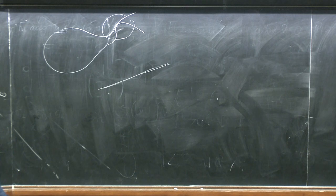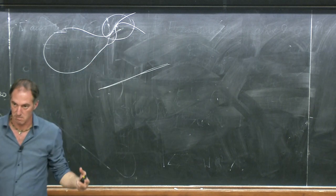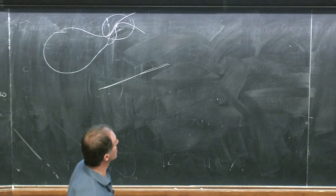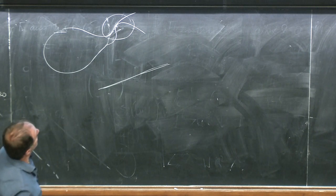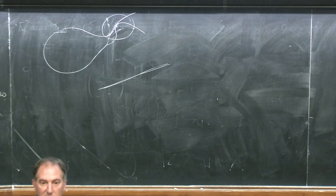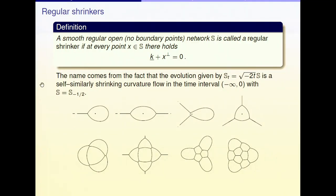So our limit shrinker is embedded, with no self-intersection. We also assumed all lengths are bounded away from zero. Since we are enlarging by a factor going to plus infinity, all the lengths in the limit network go to plus infinity. So all curves in the limit shrinker must have infinite length. This excludes compact shrinkers like the circle, the spoon, the lance, and the fish.